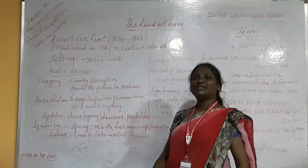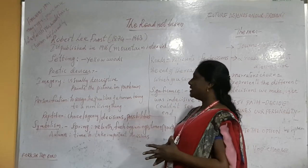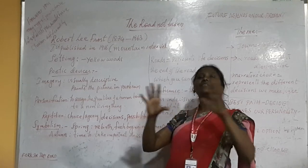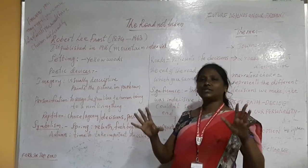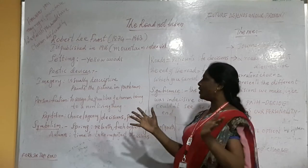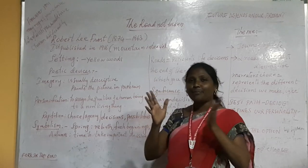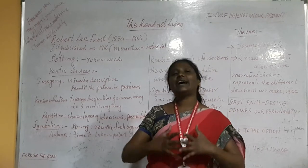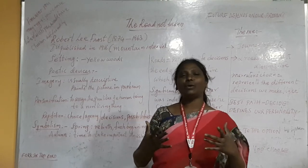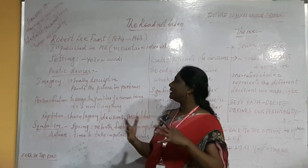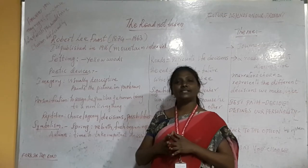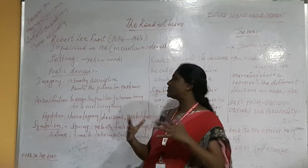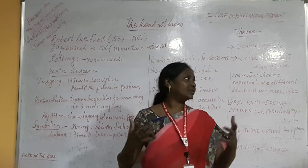Now, imagery. What is imagery? The poet has visually described everything — the setting, how the roads look — as if it is a painting in front of our eyes. The device the poet has used is imagery, that is painting the picture vividly in front of us.